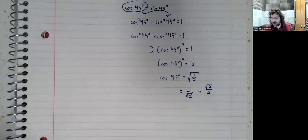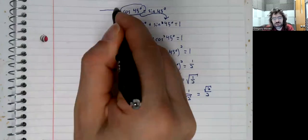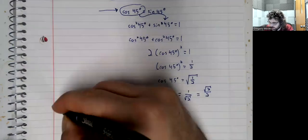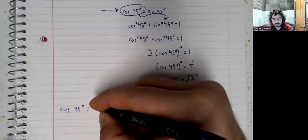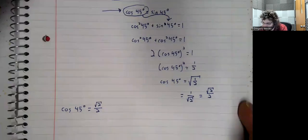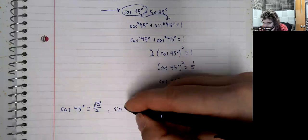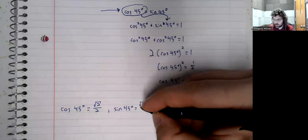And now we've found the cosine, but we've also made the observation that the sine and the cosine are the same. So the cosine of 45 degrees is the square root of 2 over 2. And the sine of 45 degrees is the square root of 2 over 2.